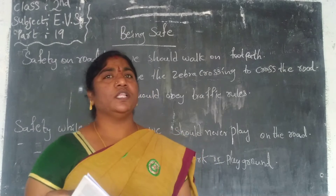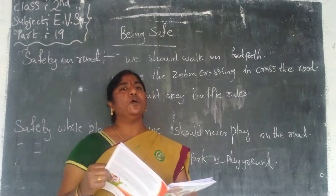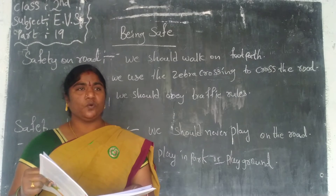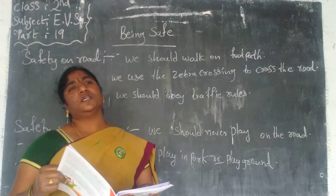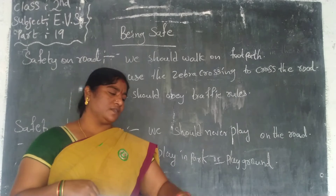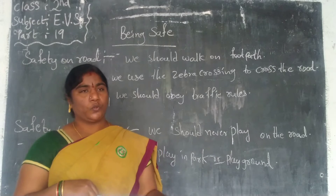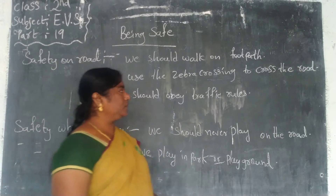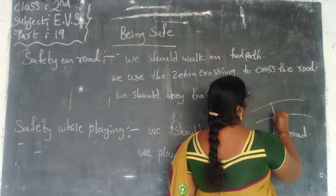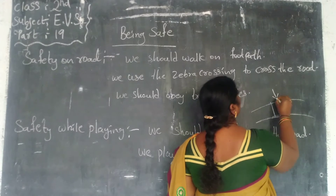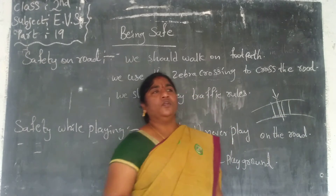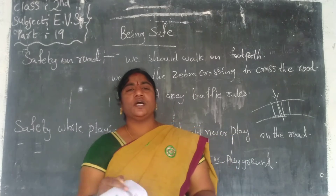We should use zebra crossing to cross the road. On the road, where there is white paint lining on the black road, that is called zebra crossing. We have to cross the road there only.